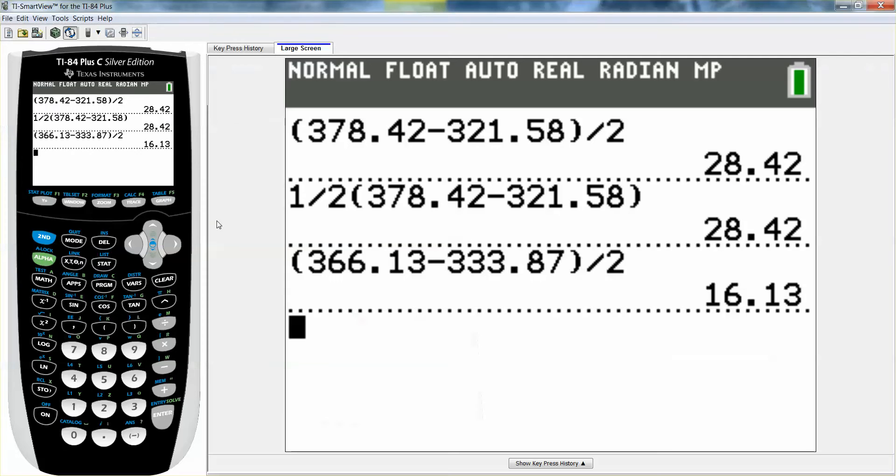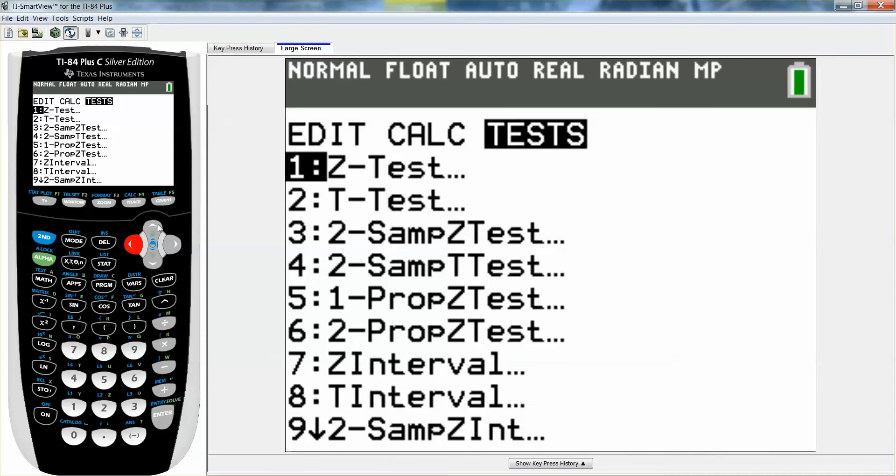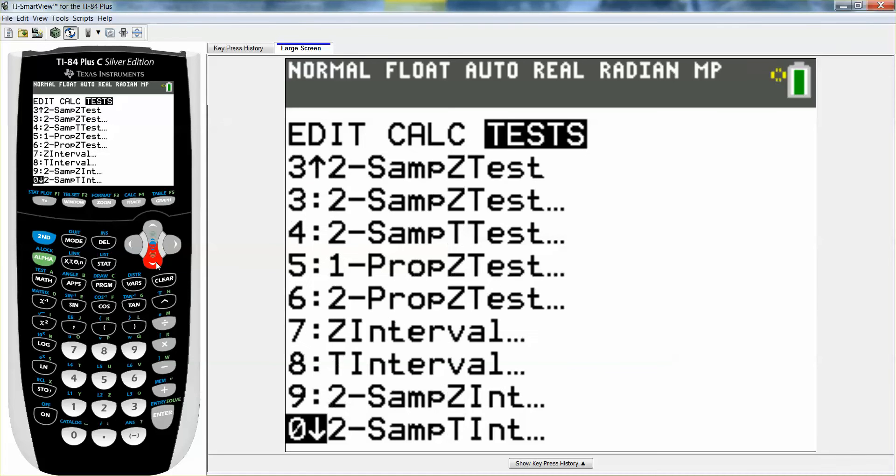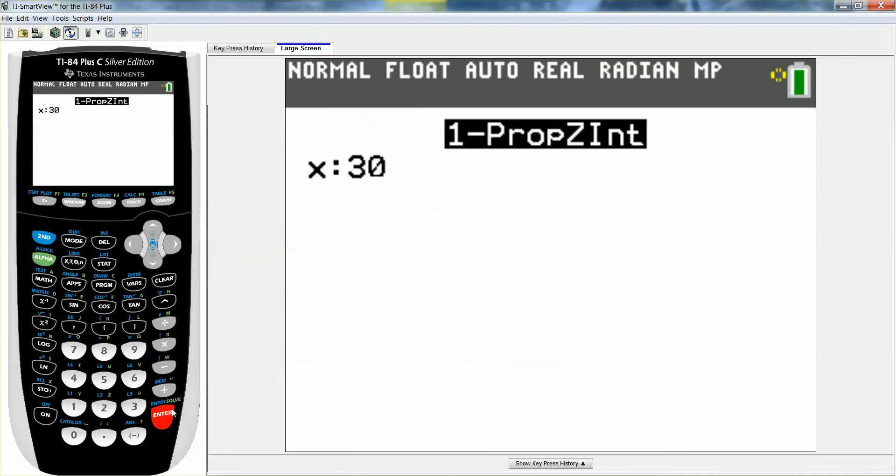So I'm going to go to the calculator. I'm going to make the calculator do all this. So I go to stat, tests, and you want to find one prop z interval. Not test, but interval. It's letter a. So one prop z int. x was 40, n was 100. My first confidence level is 0.80. So I'm going to type 0.80. Calculate, enter.